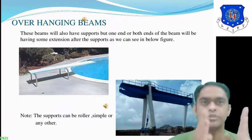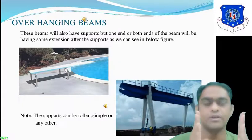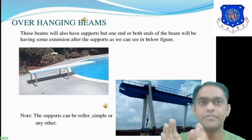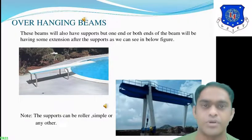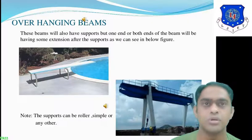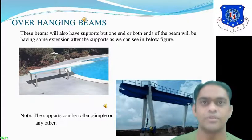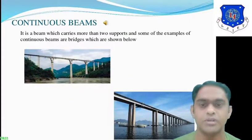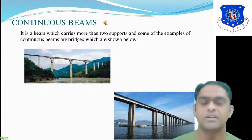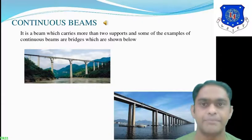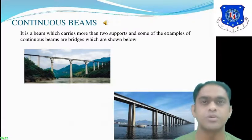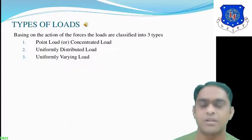Overhanging beams: as you can see in the figure, though there are two supports provided under the beam, some portion of the beam extends beyond the support. One end or both ends of the beam will have some extension after the support — these are known as overhanging beams. The supports can be roller, simple, or any other type. Continuous beams: the most common example is a bridge, which has more than two or three supports. These are known as continuous beams.